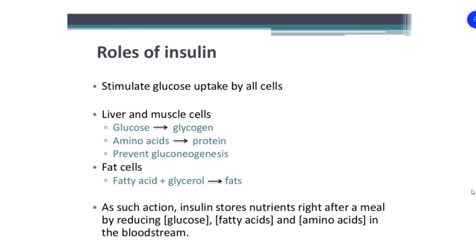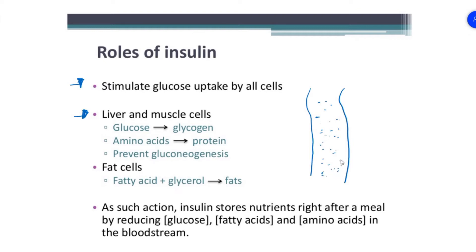Here are some of the roles of insulin. The first role is to stimulate glucose uptake by cells — to facilitate the usage of glucose in muscle cells, liver cells, and others. When there is a lot of blood sugar in the bloodstream, some of it will go into the cells and some will go into storage. One form of storage is in the liver, which transforms glucose into its storage form, called glycogen.